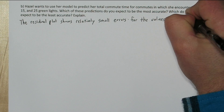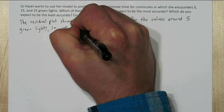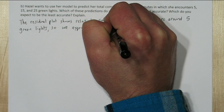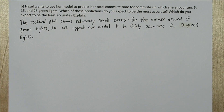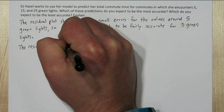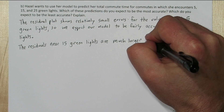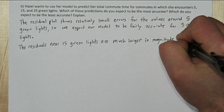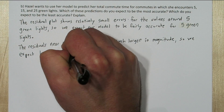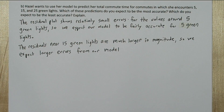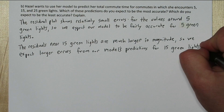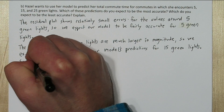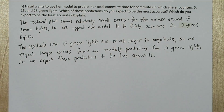The residual plot shows relatively small errors for the values around 5 green lights, so we expect our model to be fairly accurate for 5 green lights. The residuals near 15 green lights are much larger in magnitude, so we expect larger error from our model's predictions for 15 green lights, meaning we expect this prediction to be less accurate.